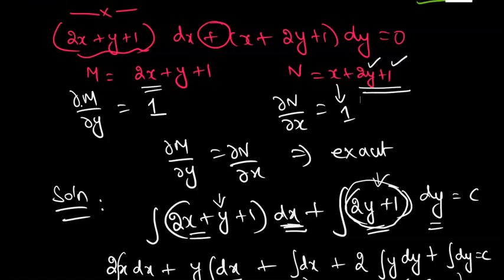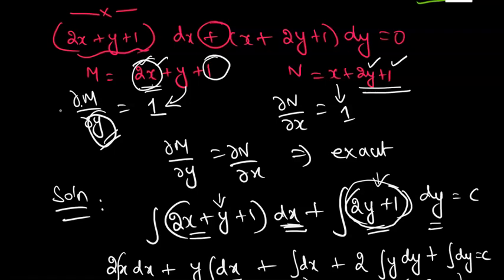Practice more problems. When partially differentiating, keep this in mind: differentiating with respect to x means only x terms are differentiated; differentiating with respect to y means only y terms are differentiated — everything else is treated as a constant. For example, when differentiating with respect to y, 2x is just a constant like any number, so it gives 0. Y differentiation is 1. If you keep this in mind, you won't make any silly mistakes. Thank you.